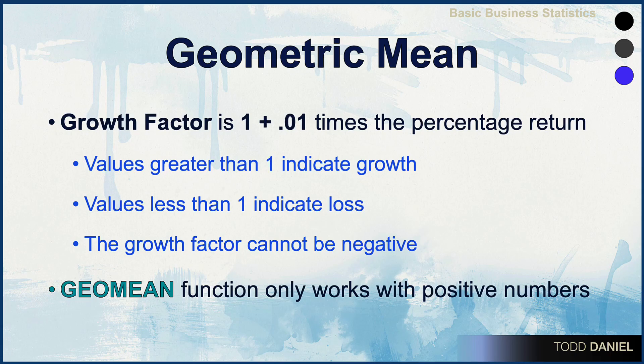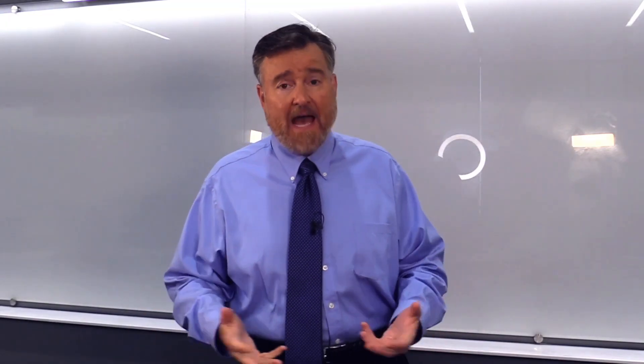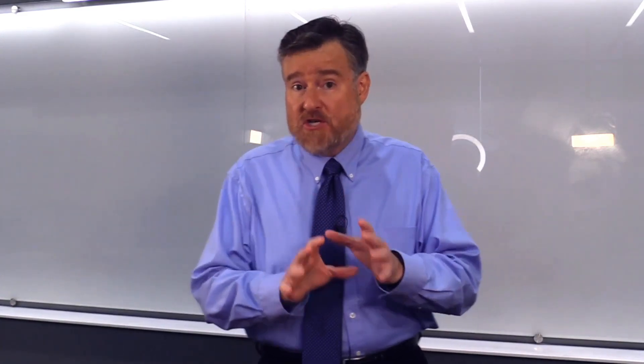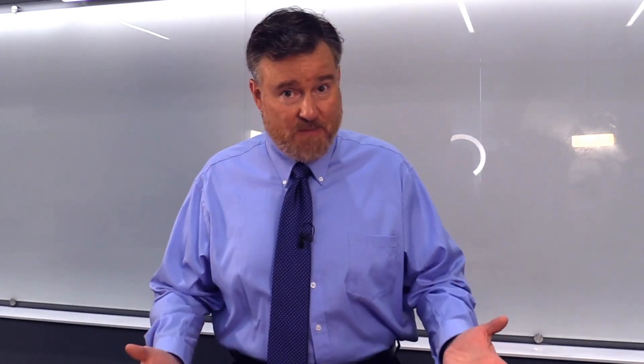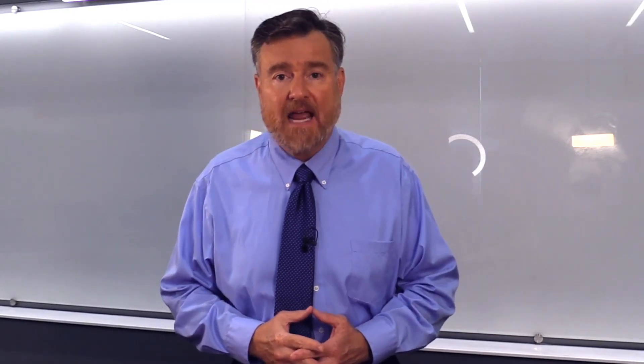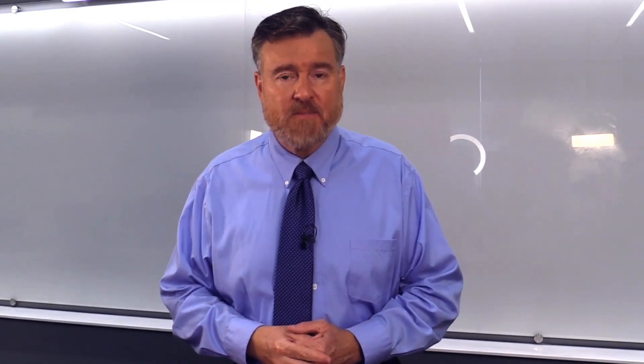The geometric mean relies on calculating a growth factor, which is 1 plus 0.01 times the percentage return. Values greater than 1 indicate growth, a value of 1 indicates no change, and values less than 1 indicate loss. The growth factor can never be negative. When I teach you about growth factors and geometric means using Excel, you will see that the GeoMean function will only work with positive values. If you try to run the GeoMean function with negative values, you will get an error, but I'll show you how we would calculate the geometric mean using Excel.